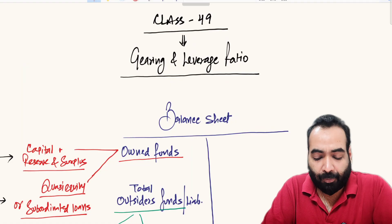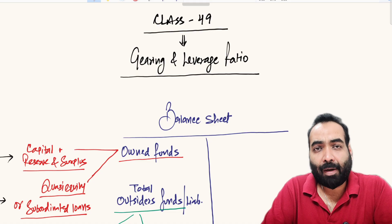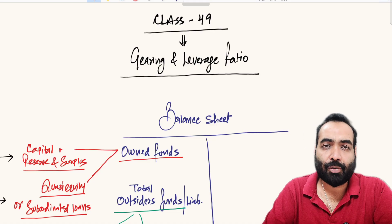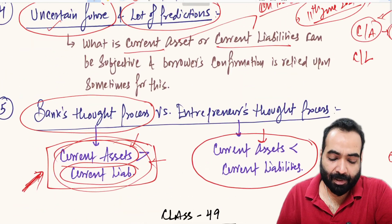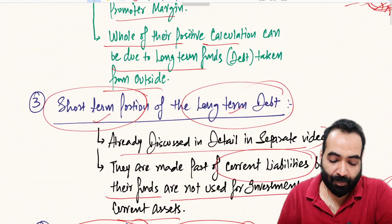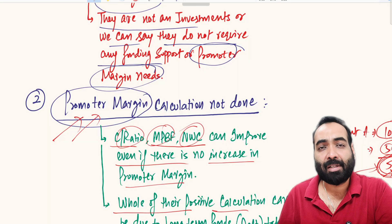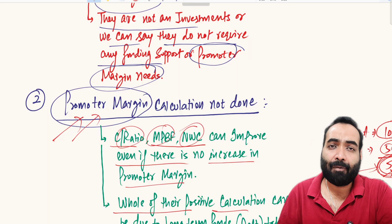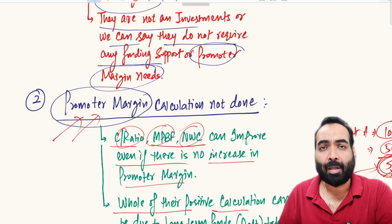Welcome back friends to class number 49. In the previous video we discussed the shortcomings of NWC, current ratio, and MPBF in full detail. One of the points discussed was about the non-consideration of promoter margin in all of these calculations, and I mentioned we would come up with a solution for that which is actually followed by banks while assessing their loan proposals.